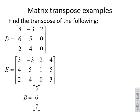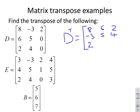Some more examples: find the transpose of the following. For D transposed, the top row is 8, 6, 2; the second row is −3, 5, 4; and the third row is 2, 0, 0. The remaining example is left for viewers to pause the video and try themselves.